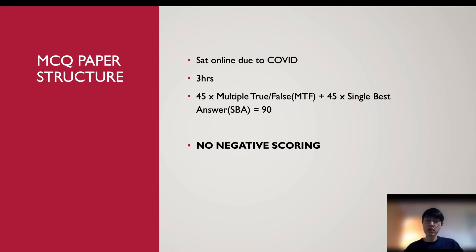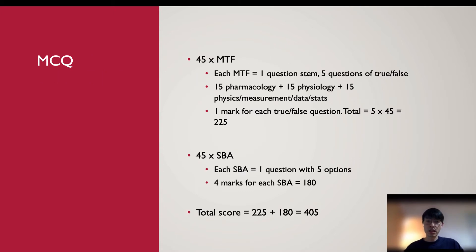There is no negative scoring, so please answer all questions. For multiple true/false questions, there will be one stem question with five true or false options, giving a total of 45 × 5 = 225 multiple true/false items. These are evenly distributed across physiology, pharmacology, and physics. For single best answer questions, you will have five options per question, and each question carries four marks, giving a total of 180 marks.